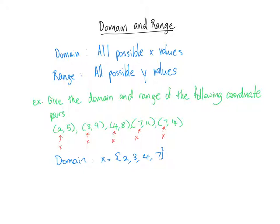All right, so a couple things to notice here. When you're listing the domain, make sure to use curly brackets. This is telling us that this is the set of all possible x values. Also, you don't need to list things twice. And you want to make sure you're indicating that these are x values.